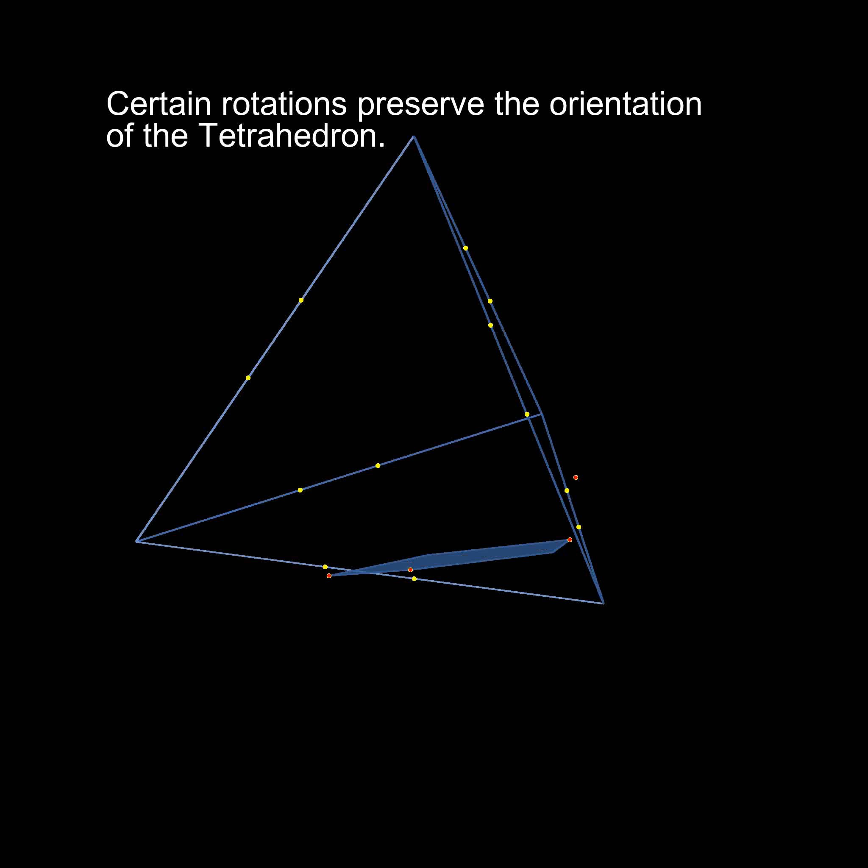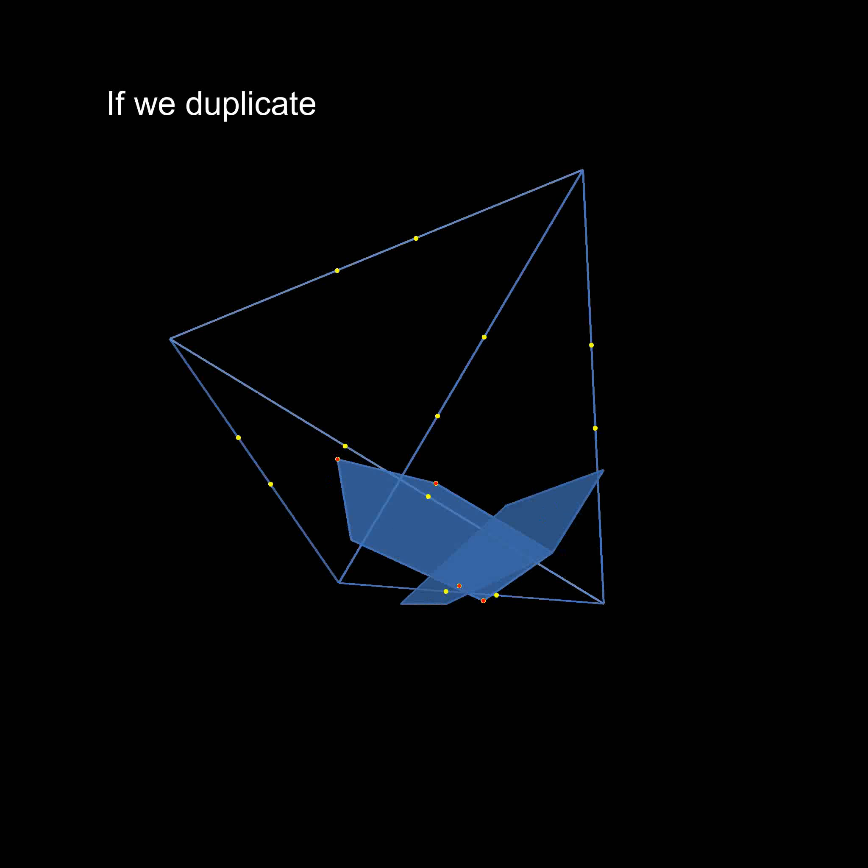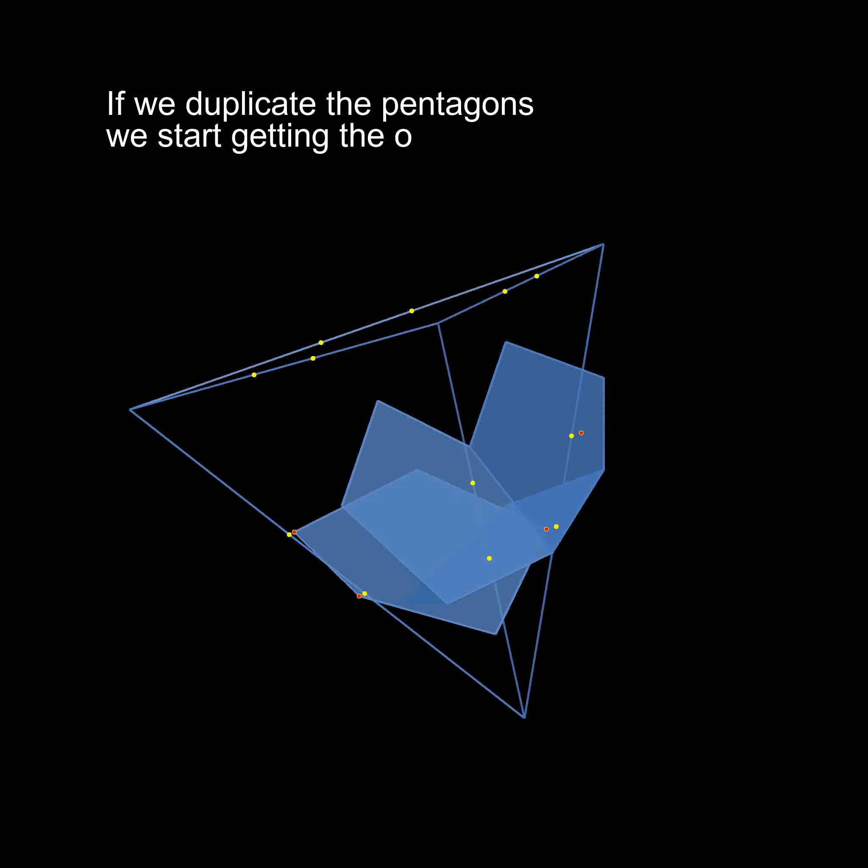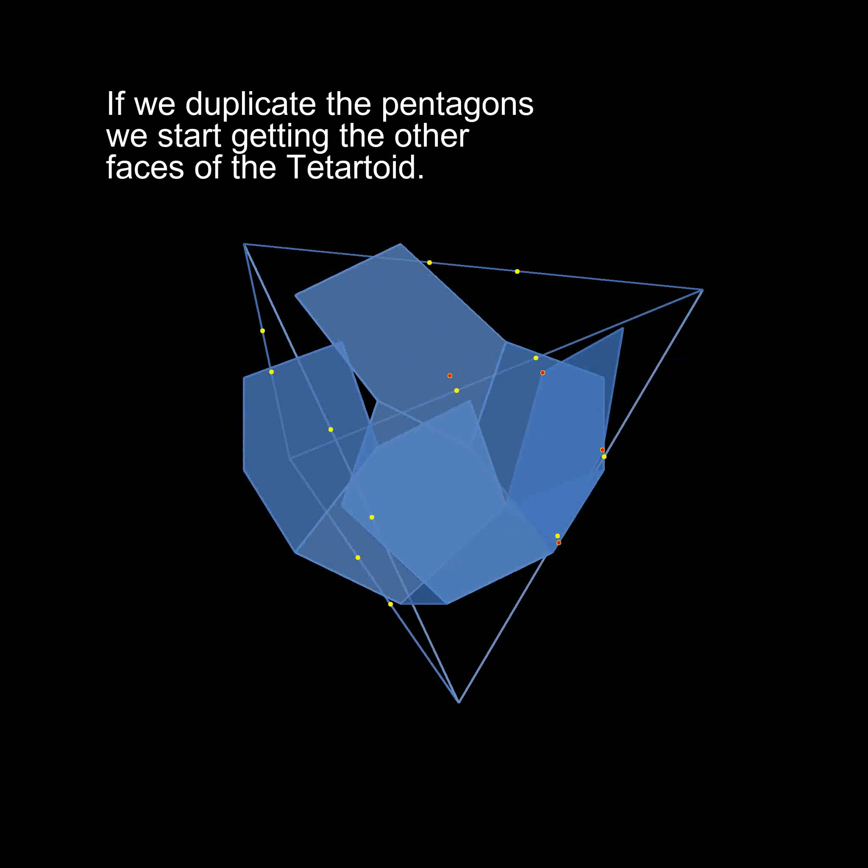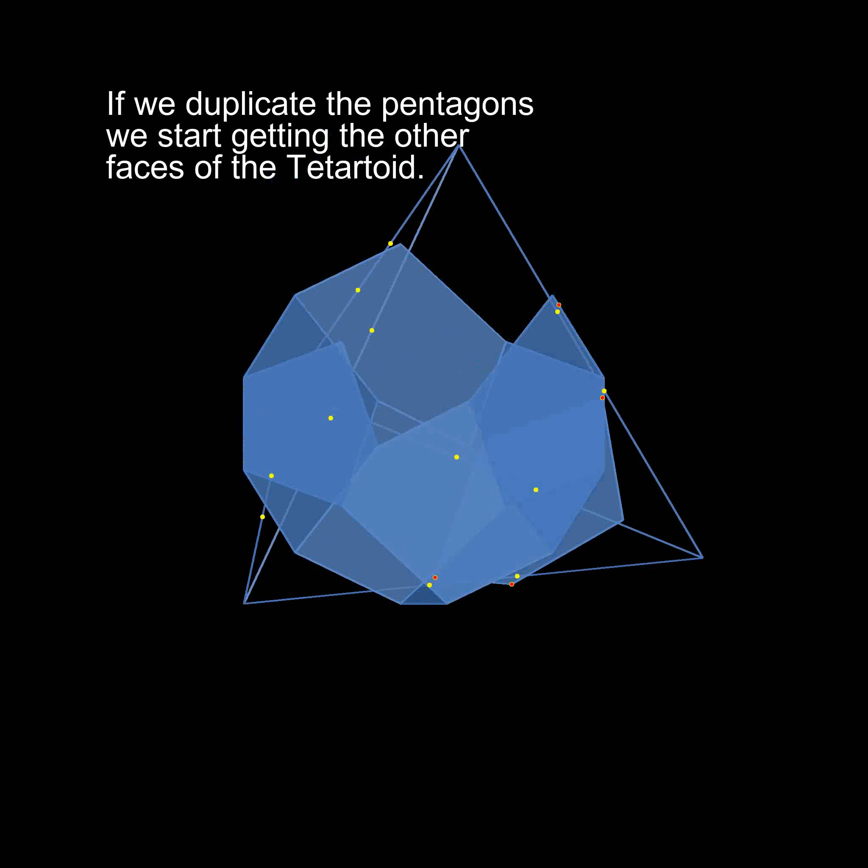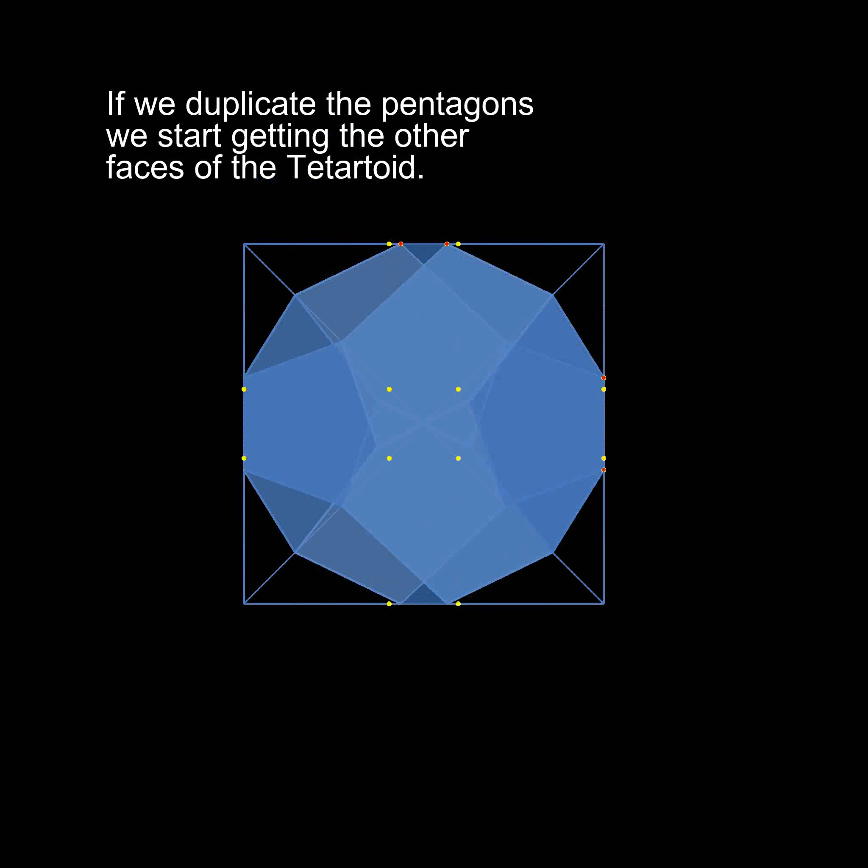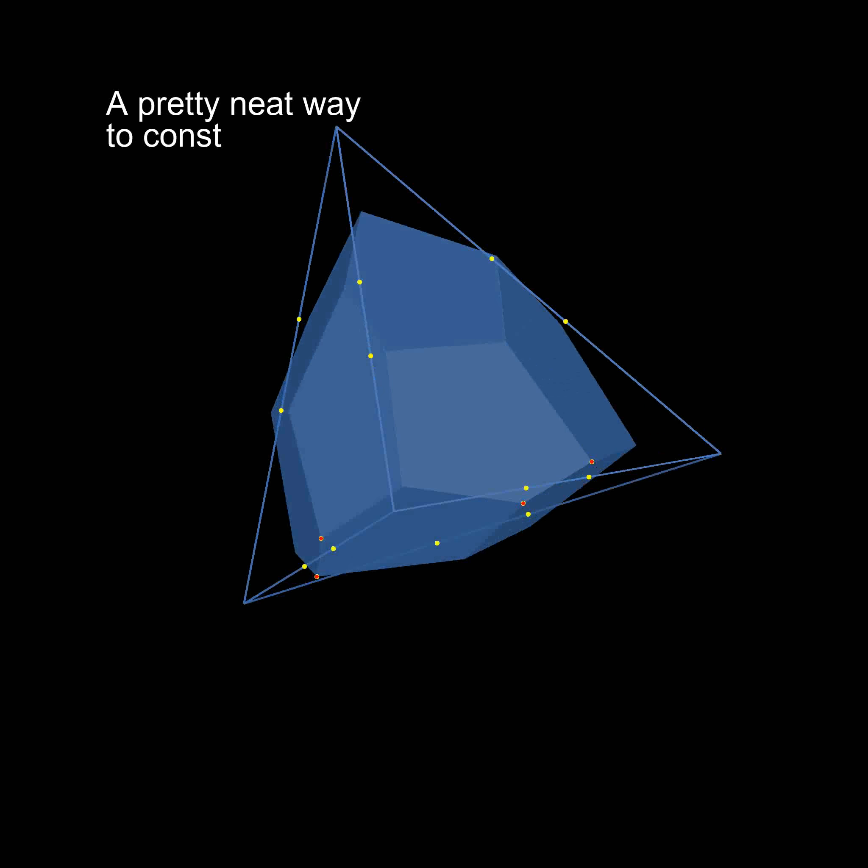If we duplicate these pentagons as we do those rotations, we get all the faces of the tetartoid magically arranged in the form of the final solid. Which is a pretty neat way to construct it in my opinion.